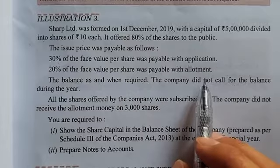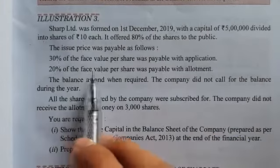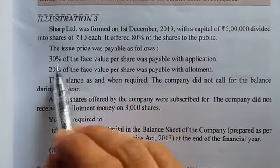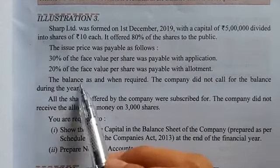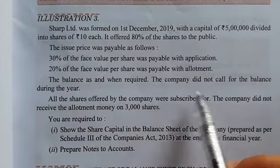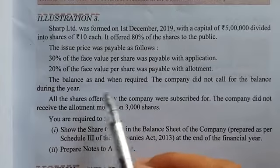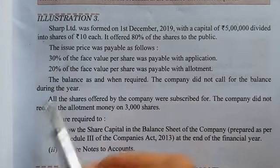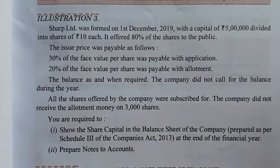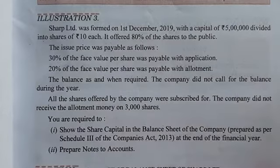When the shares are accepted, shareholders pay 20% of the face value, which is Rs. 2 on allotment. The balance is Rs. 5 per share, payable as and when required. The company did not call for the balance during the year — so Rs. 3 on application, Rs. 2 on allotment, and Rs. 5 balance uncalled.